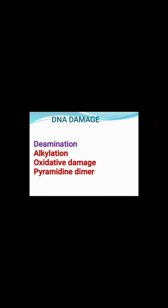Please recall: adenine — 6-amino; guanine — 6-keto and 2-amino; cytosine — 6-amino and 2-keto; thymine — 2,6-diketo and 5-methyl. Remove the methyl group and you get uracil. That is the structure of the bases. Now coming back to DNA damage — it is the structural change or physical or chemical alteration in the DNA. According to the syllabus, we have to describe four types of DNA damage: deamination, alkylation, oxidative damage, and pyrimidine dimer formation.